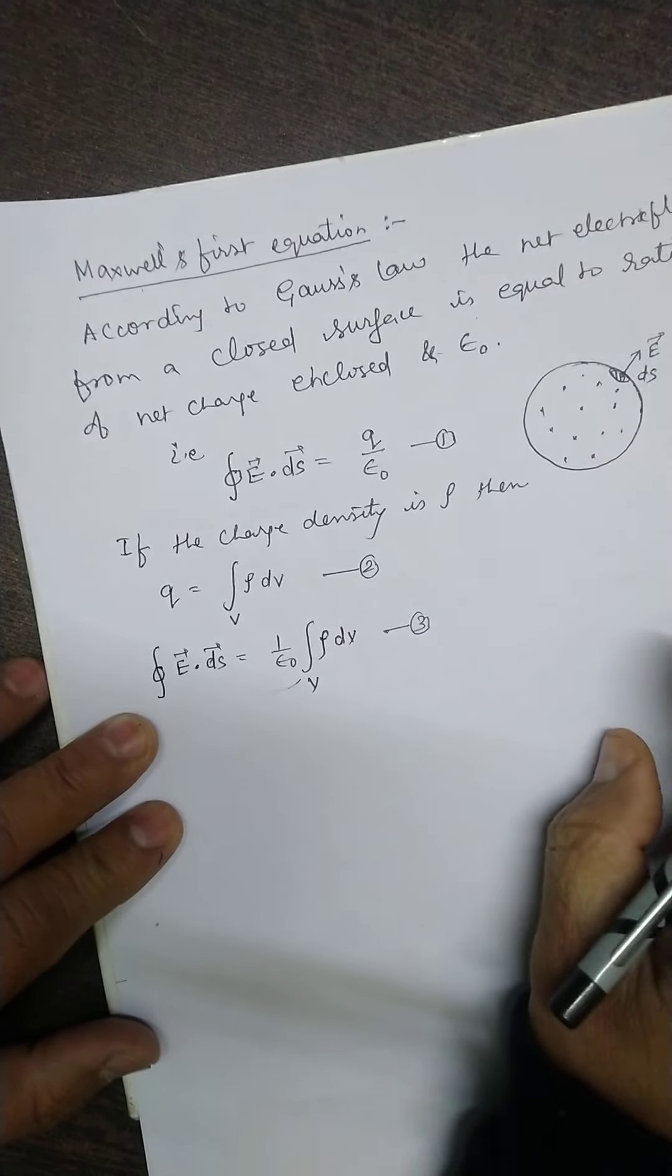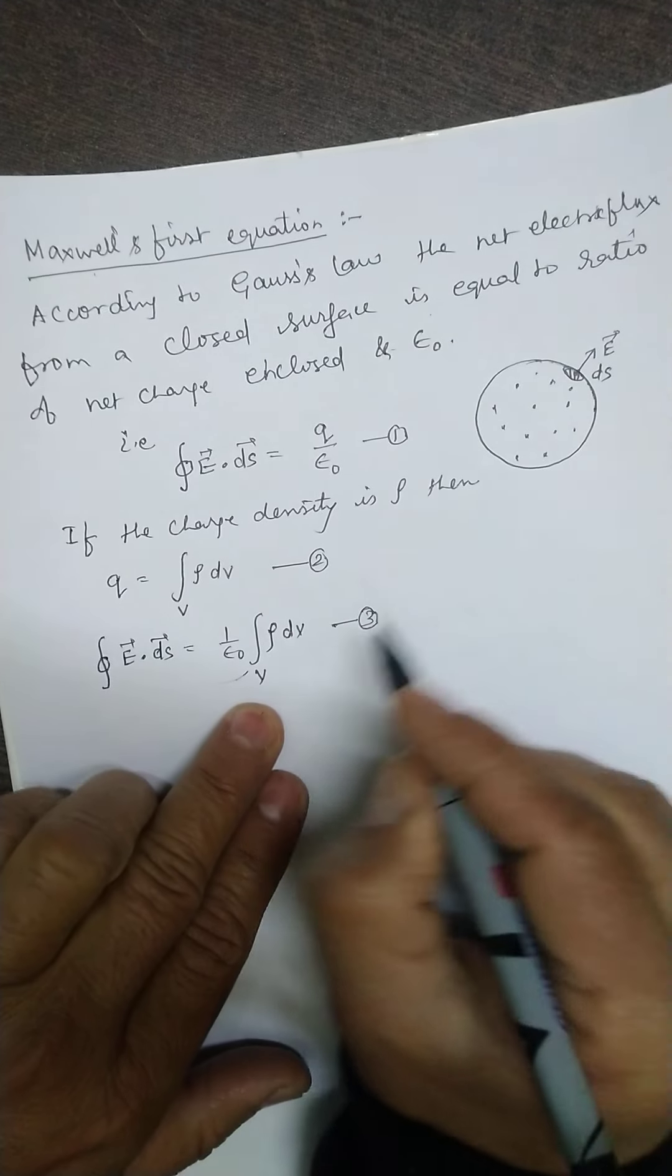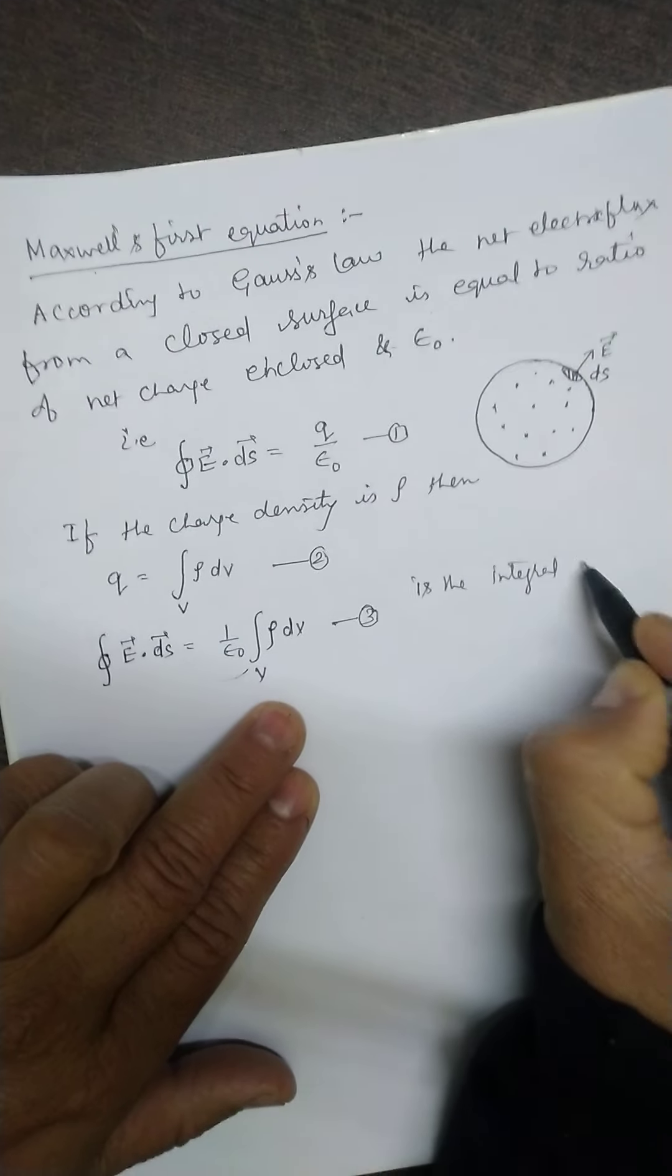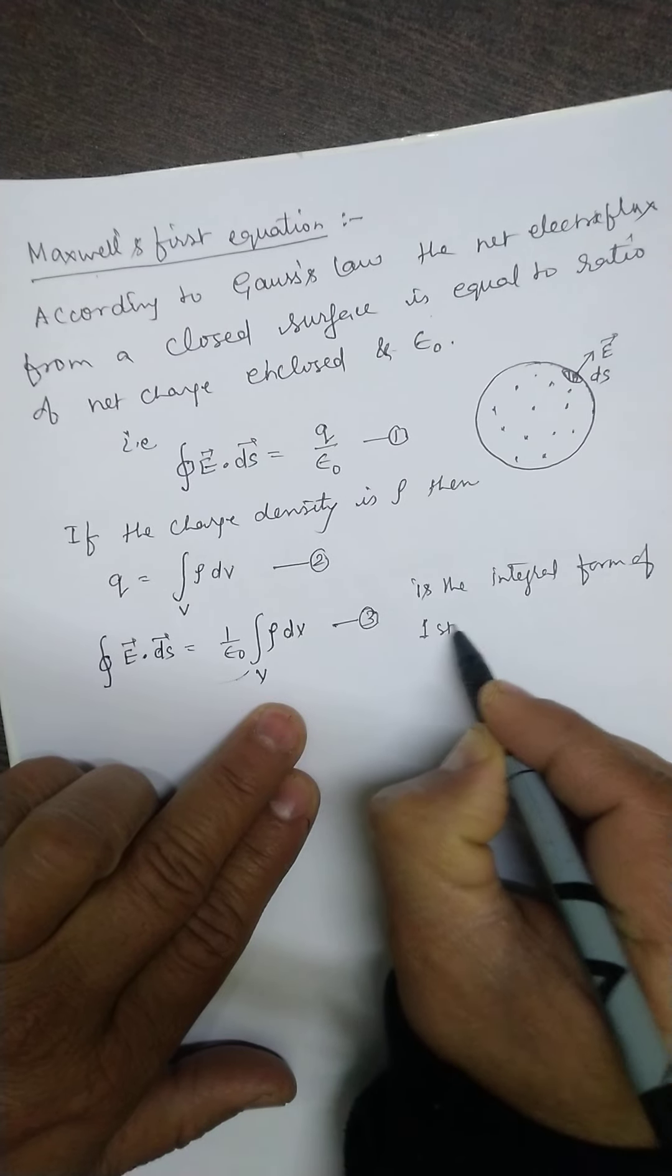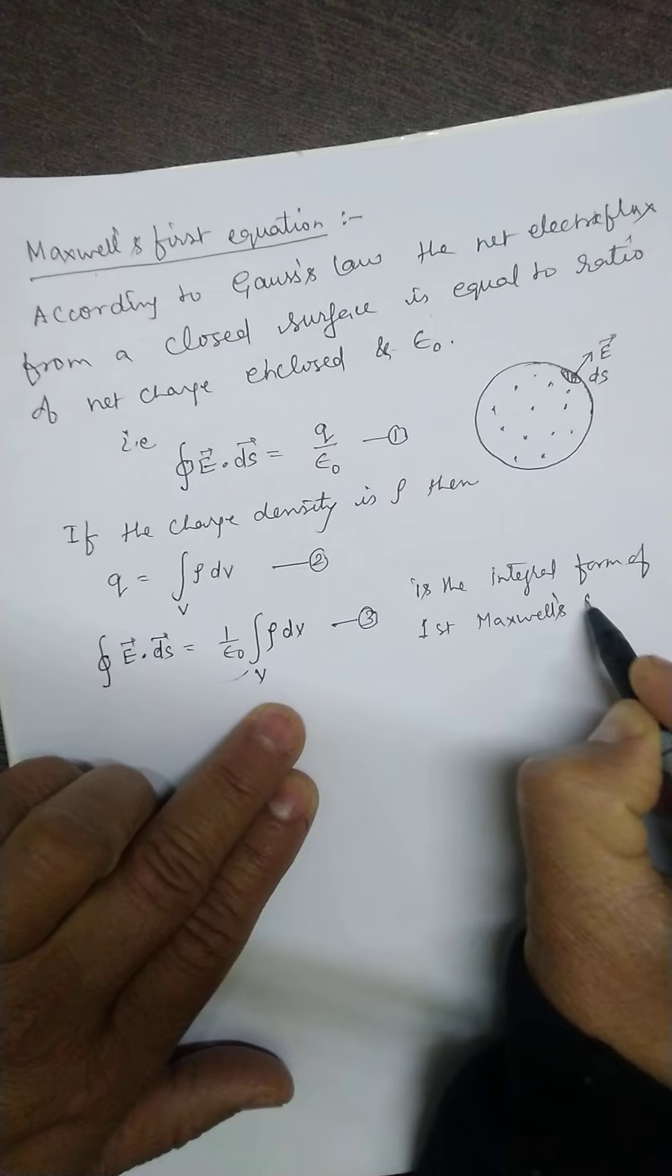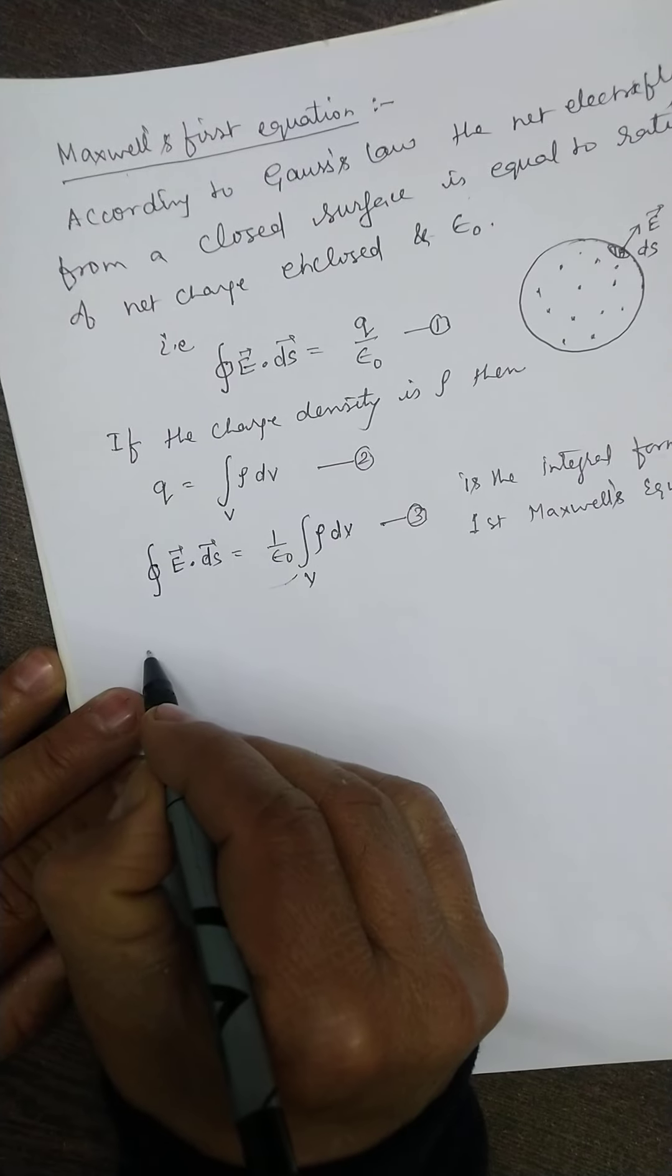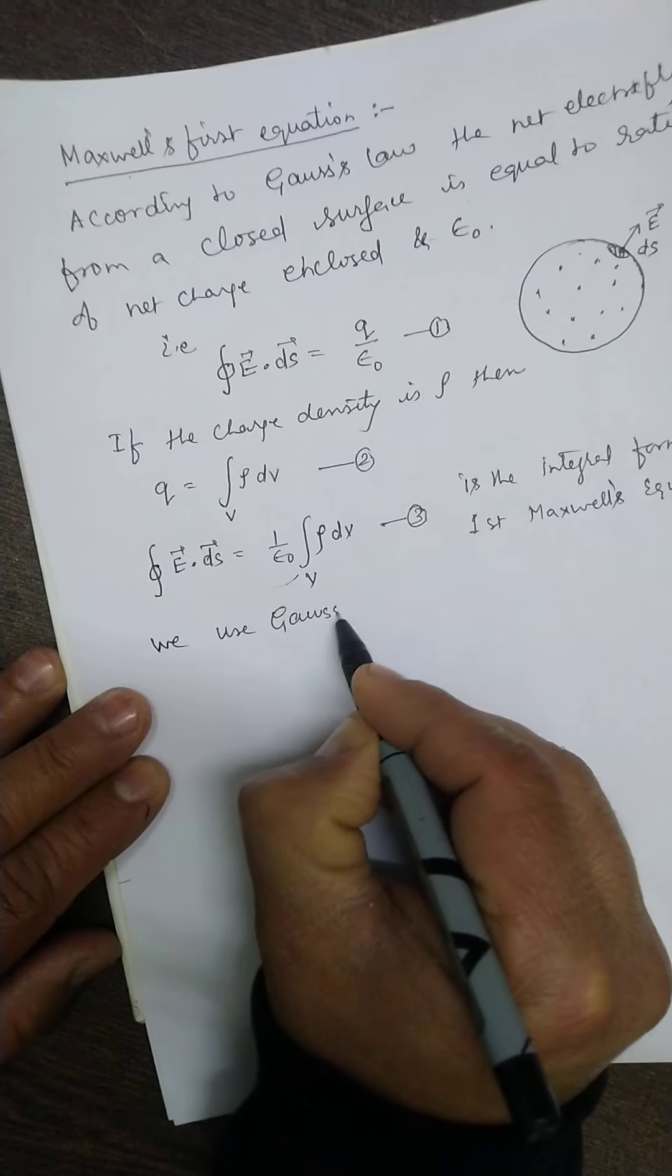This is equation one, and you will be happy to know that this simple equation is the integral form of the first Maxwell's equation. Now we use Gauss's Divergence Theorem.